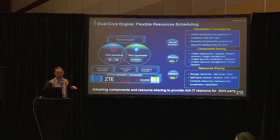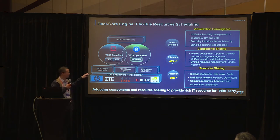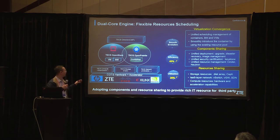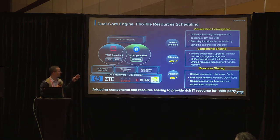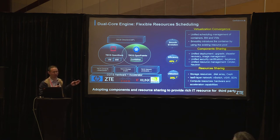If you deploy OpenStack and Kubernetes separately, that means two clouds — hardware cannot be shared and networks have to be interconnected. With the converged approach, OpenStack and Kubernetes share compute and storage resources like Ceph storage and disk arrays on the hardware layer.